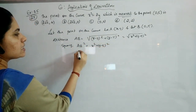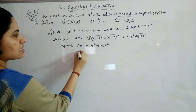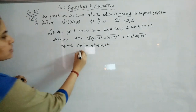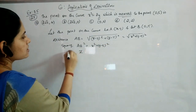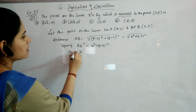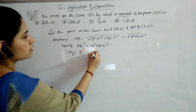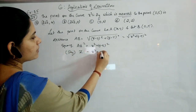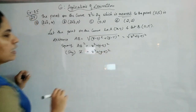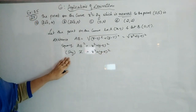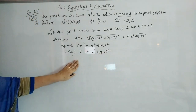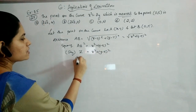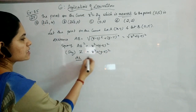We take this as z to identify it easily: z = AB² = x² + (y - 5)². Now we will differentiate this. But we have two variables x and y, so it is difficult to decide which to use as the independent variable.